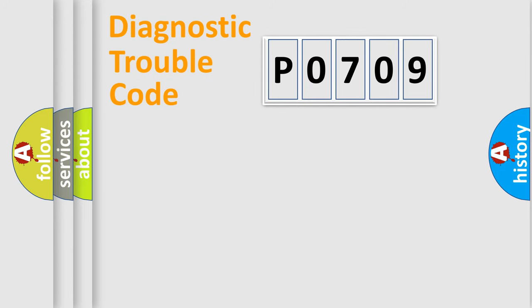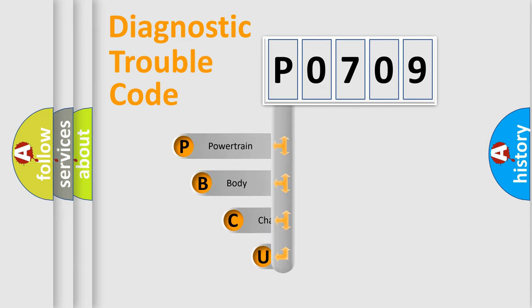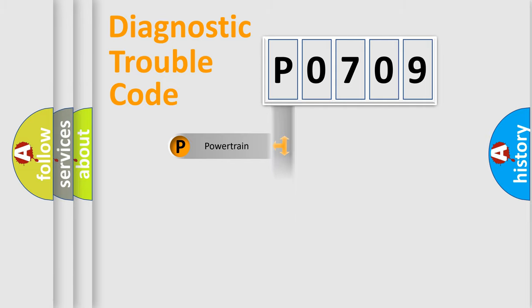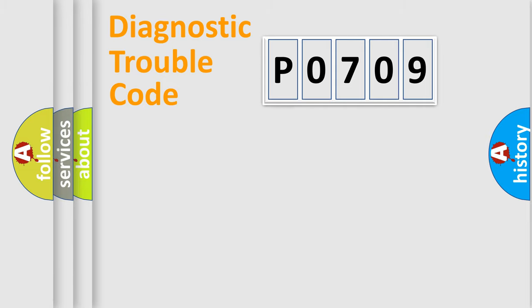Let's look at the history of diagnostic fault code composition according to the OBD-II protocol, which is unified for all automakers since 2000. We divide the electric system of automobile into four basic units: Powertrain, Body, Chassis, and Network.